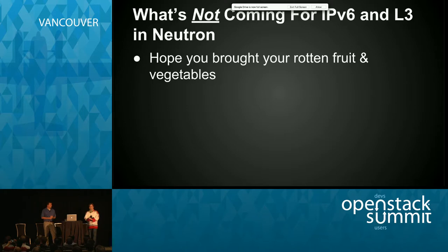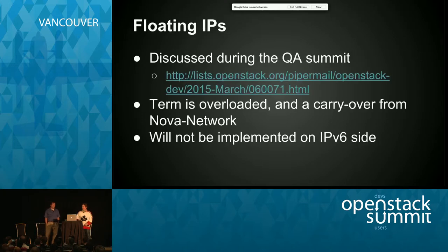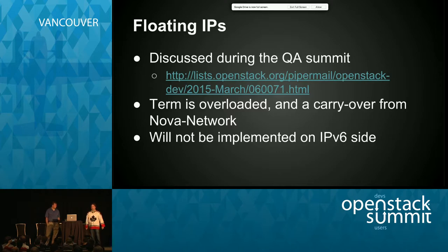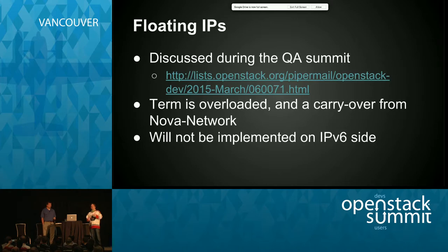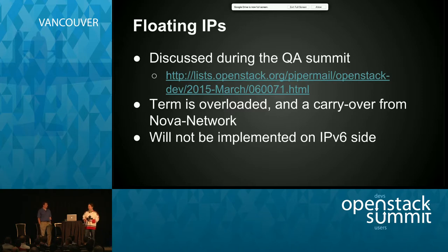Here is the part where I give out a little bit of bad news. Floating IPs is not currently on the roadmap for functionality between the IPv4 side of Neutron and the IPv6 side of Neutron. I wanted to give everybody a couple of reasons why I believe this is the case, and a little bit of history, so that you all don't hunt me down and burn me at the stake afterwards.